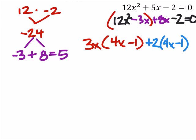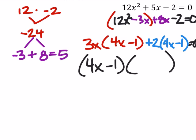And all this stuff equals 0. So I've got 4x minus 1, and 3x plus 2. And all this stuff equals 0.